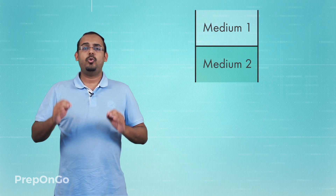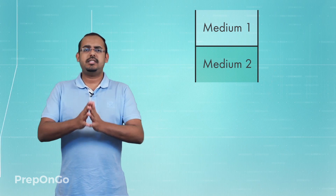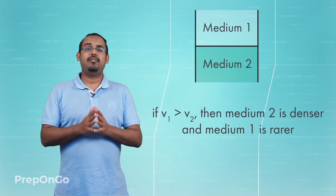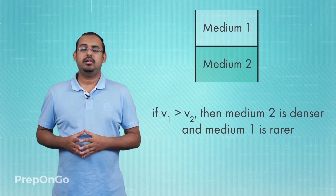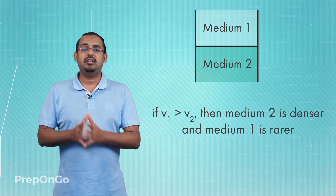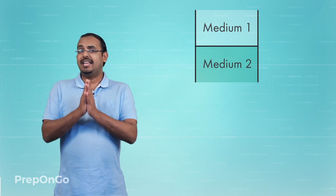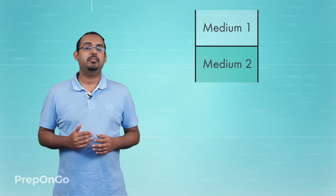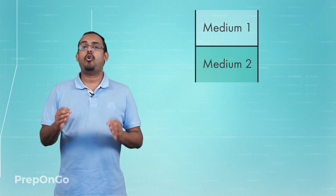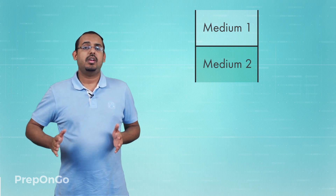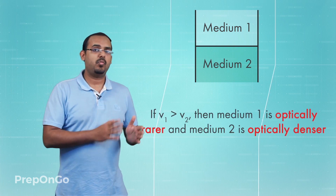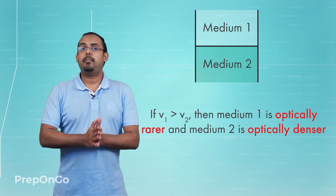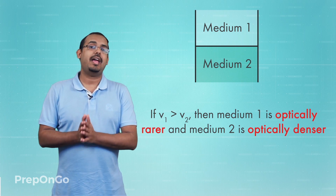If light travels slower in a particular medium, that medium is logically denser. If light travels faster in medium 1 than in medium 2, we say medium 2 is denser than medium 1. However, this density has nothing to do with mass density — it depends on the speed of light in that medium. That is why we call this optical density. So if light travels faster in medium 1 than in medium 2, medium 1 is optically rarer and medium 2 is optically denser.